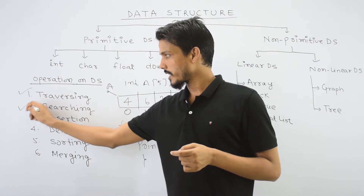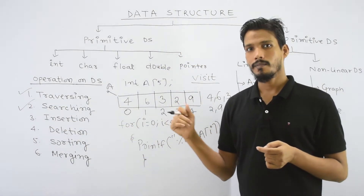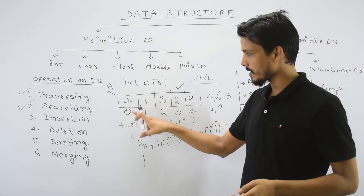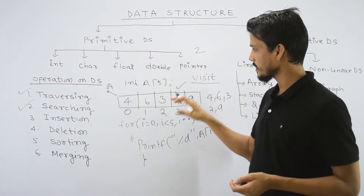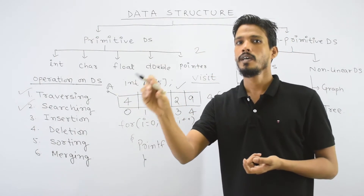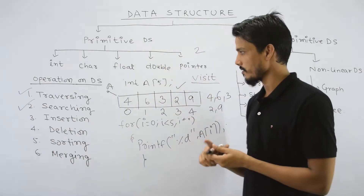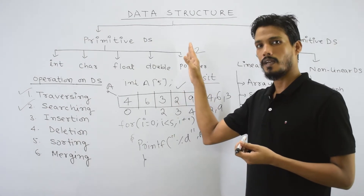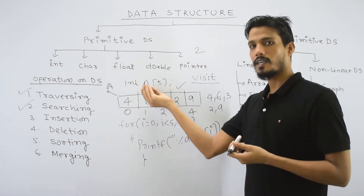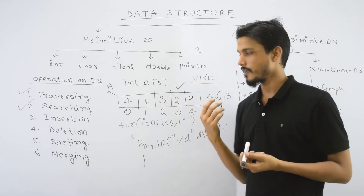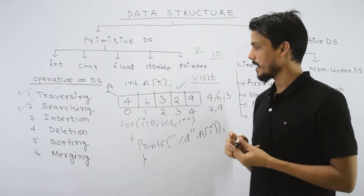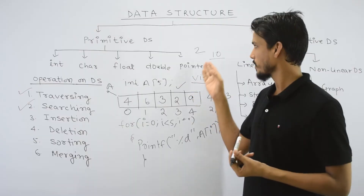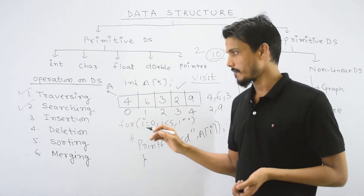This is your first operation — traversing. What is searching? Suppose you have this same array and you need to search for a particular element. You access the 0th index and check if the value matches. If all elements are done and the element was not found, it is not present in the array — this is the searching operation.